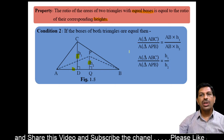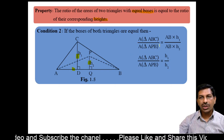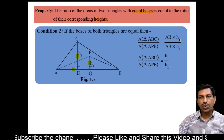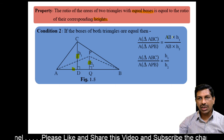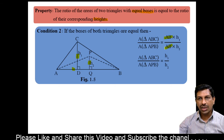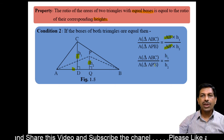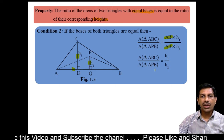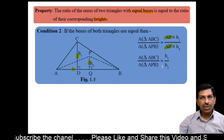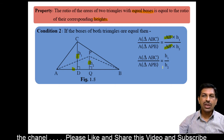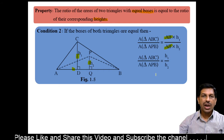Area of triangle ABC upon area of triangle APB is equal to AB into H1 upon AB into H2. This means that if the bases of the two triangles are equal, then the ratio of their areas is equal to the ratio of their heights.